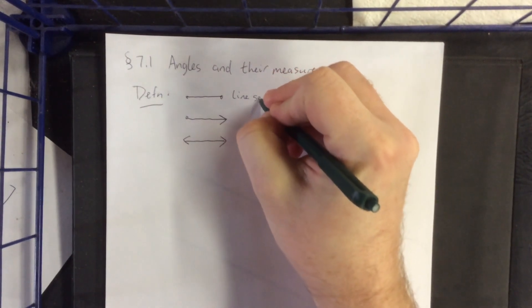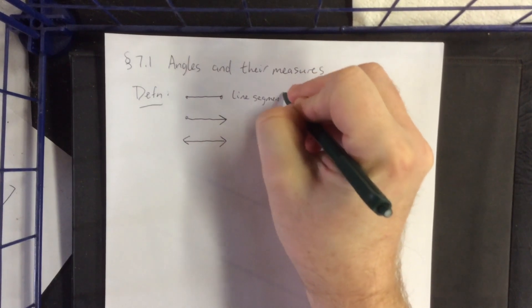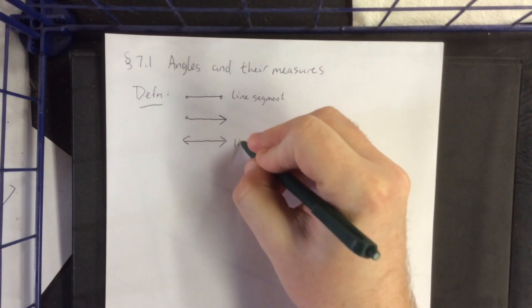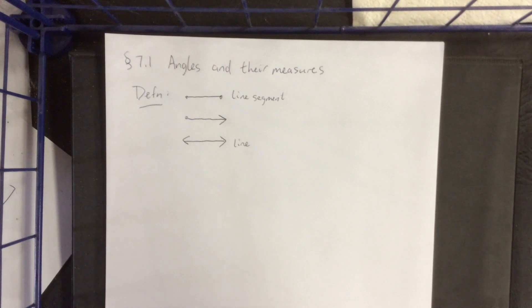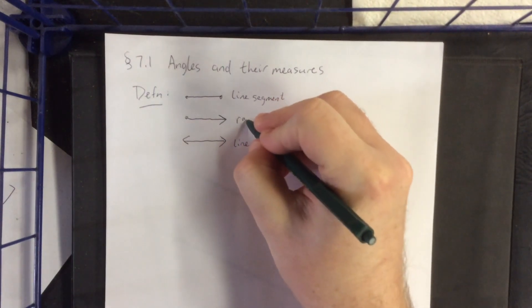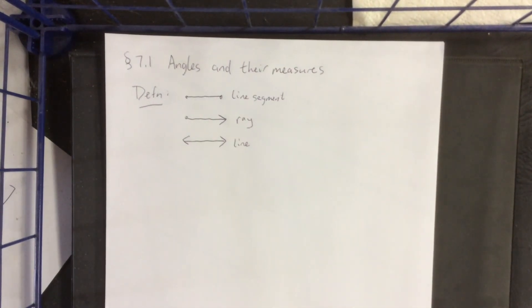In order, these are referred to as a line segment, a line, and the middle one is the thing of interest to us. That is referred to as a ray.